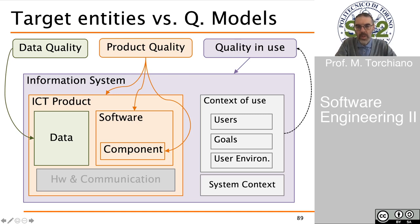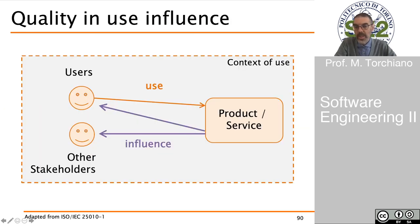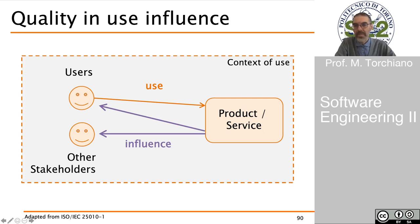Quality in use addresses the information system taking into consideration the context of use — including the different users, their goals, and the user environment. Users inside their specific context of use interact with the product, and the result of this usage influences both the users themselves with the output of the system, and can also influence other stakeholders, because the results of the user's interaction with the system can produce different effects on other stakeholders.